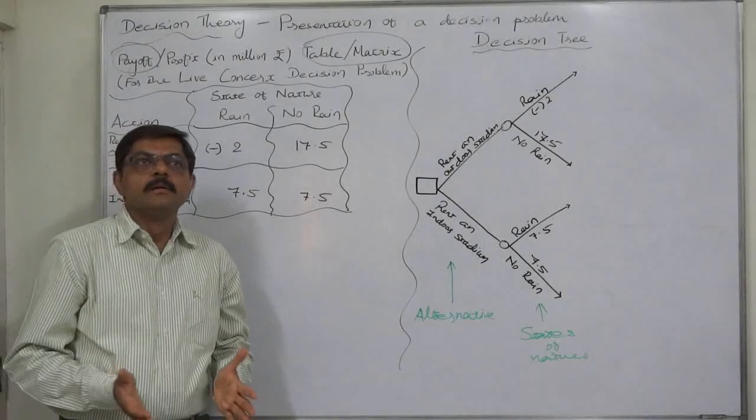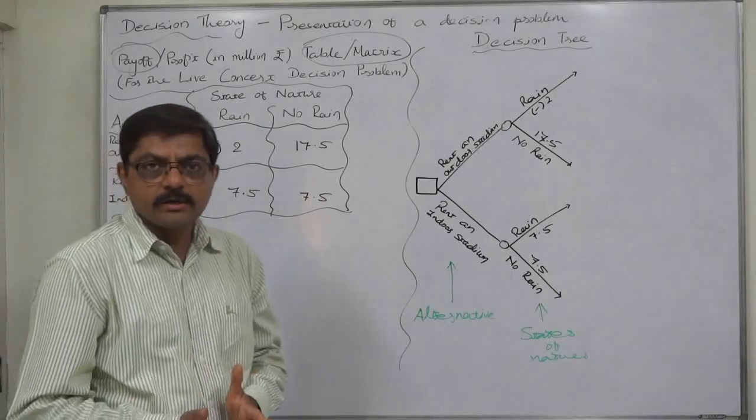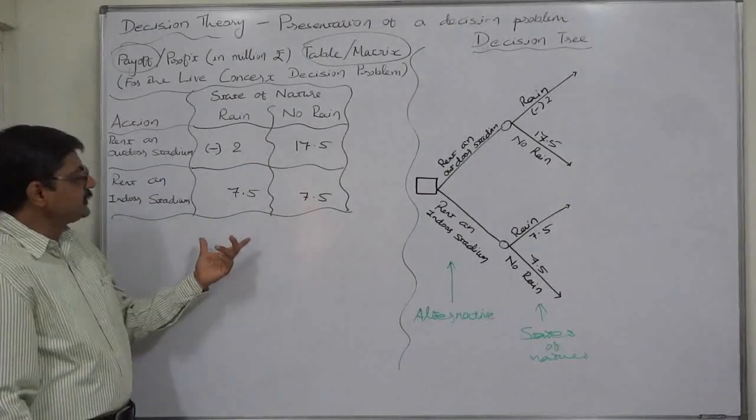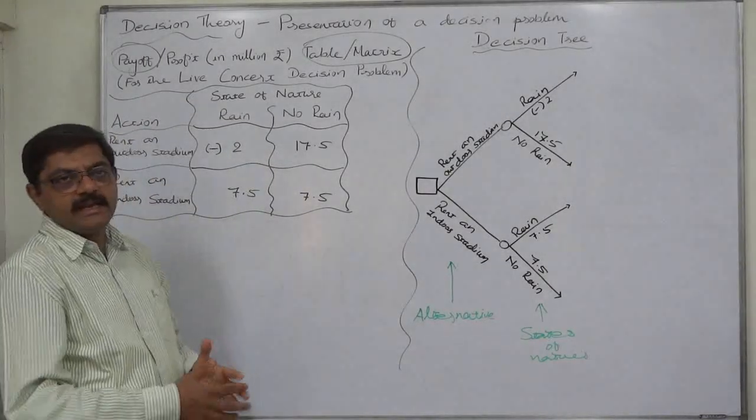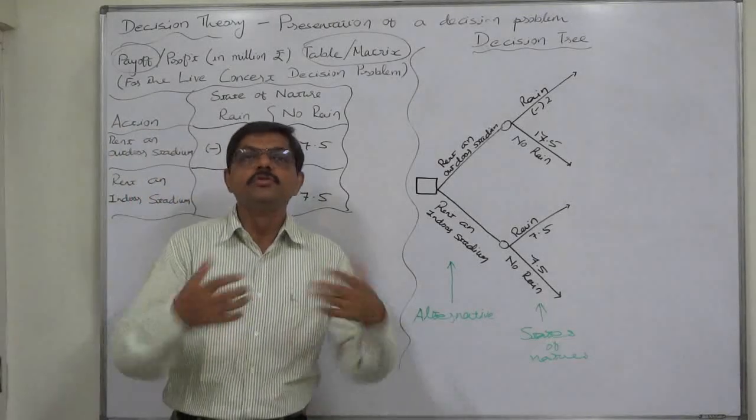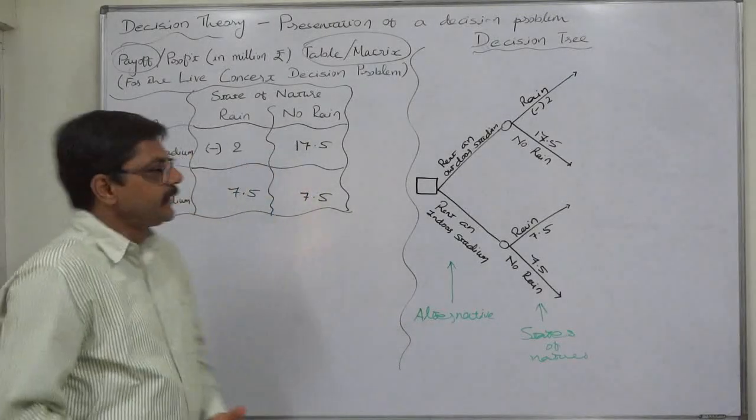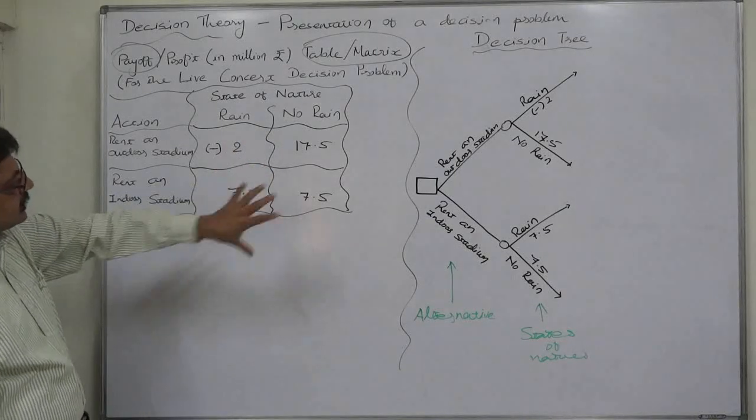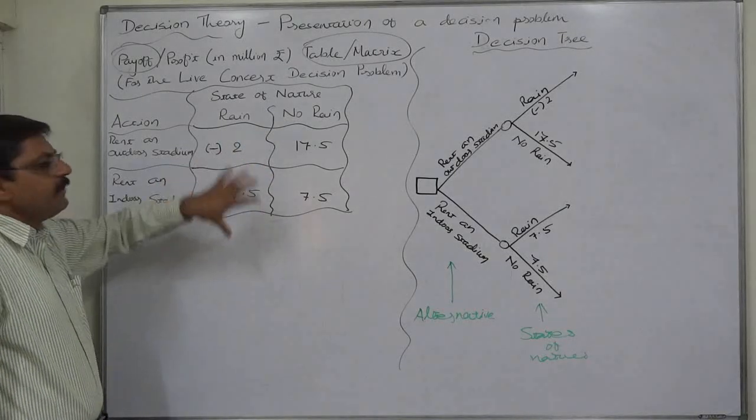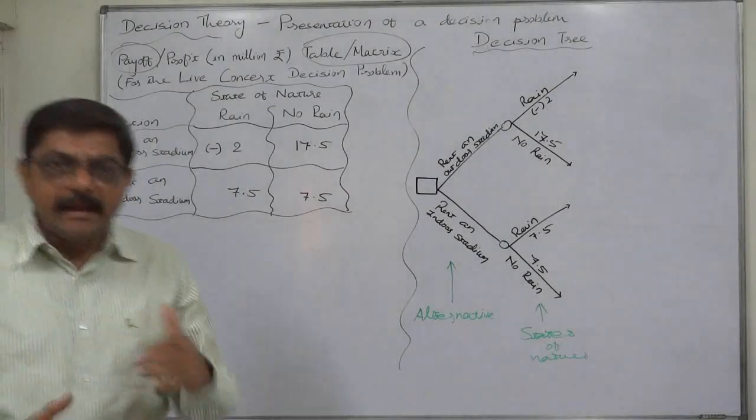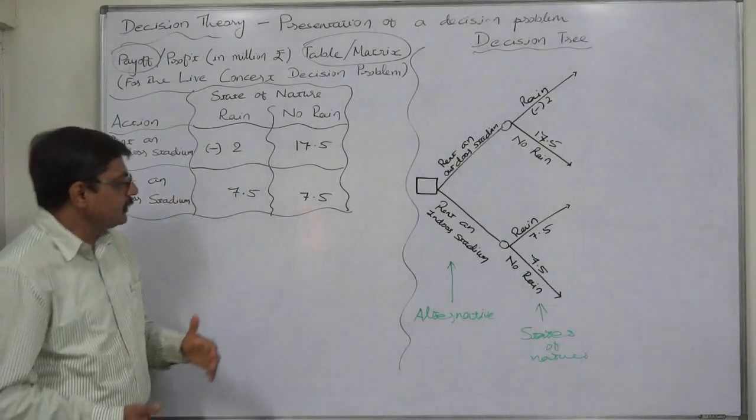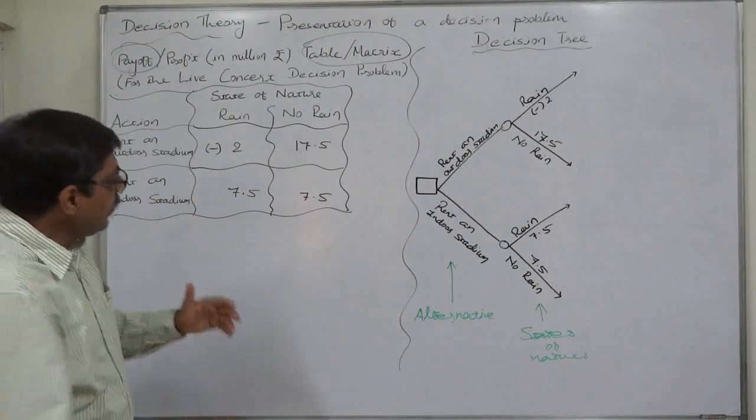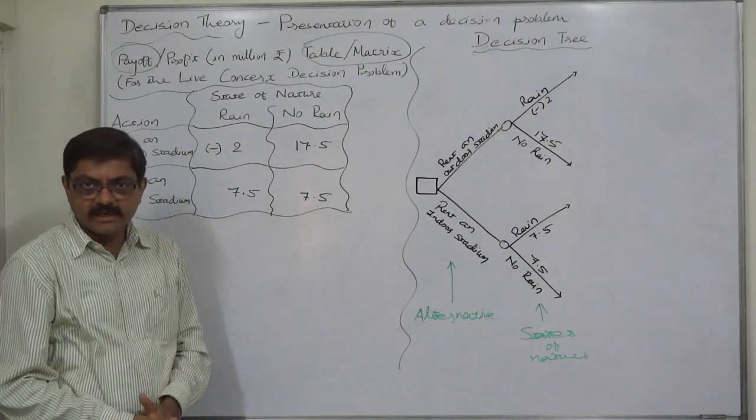So we can conclude that whether it is a decision problem in which we are going to use probability or not, this payoff matrix or payoff table is actually a user friendly way of presenting decision problem. Not only that, this presentation is comparatively very easy to understand. Even a layman who is not involved in decision making problem can also understand the payoff matrix very easily.